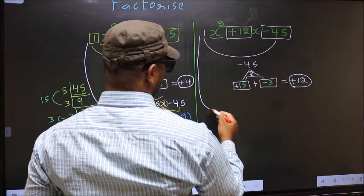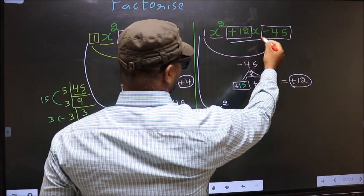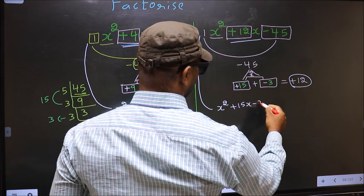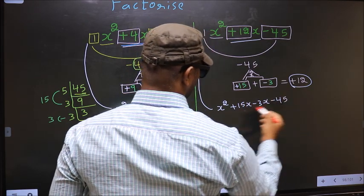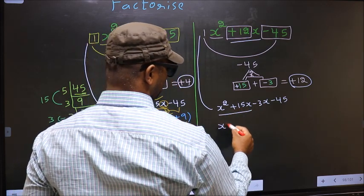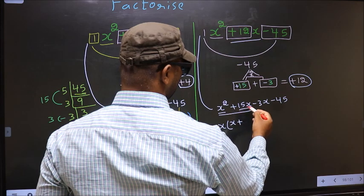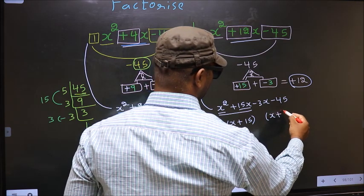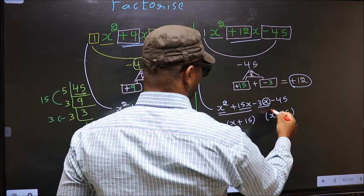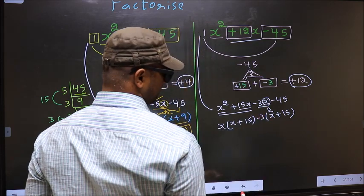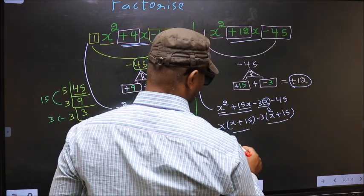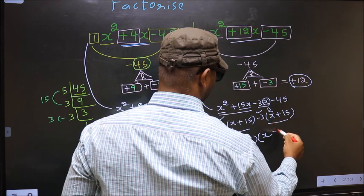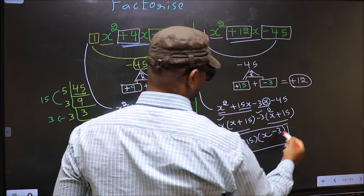Now for the second expression, change it to x squared. In place of plus 12x we write plus 15x minus 3x minus 45. From the first two terms, take out x common, so you get x times x plus 15. From the next pair, take out minus 3, giving minus 3 times x plus 15. Now take out x plus 15 as common, giving x plus 15 times x minus 3. This is the answer for the second expression.